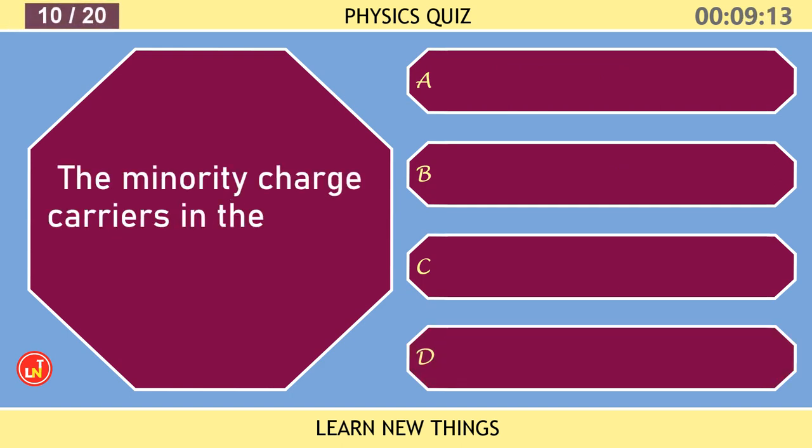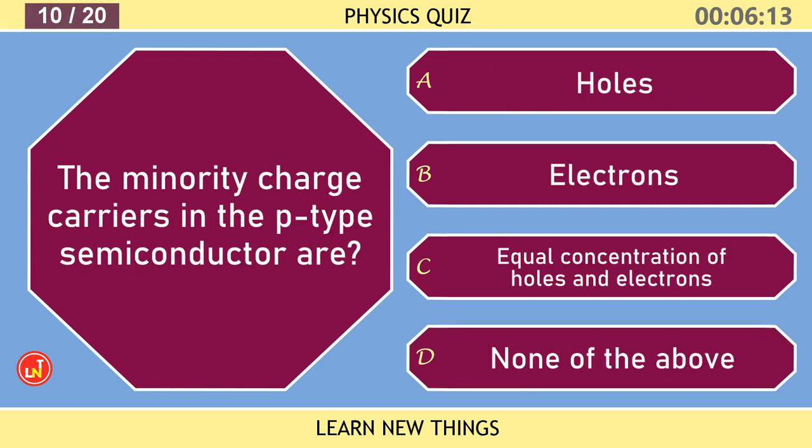The minority charge carriers in the P-type semiconductor are? Electrons.